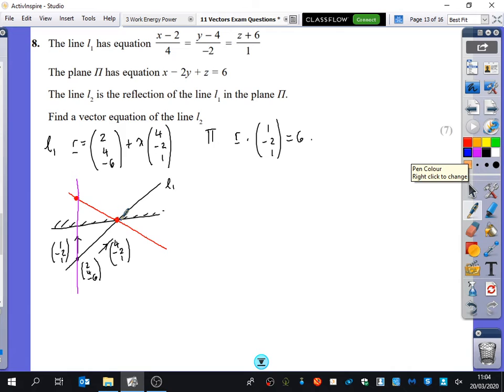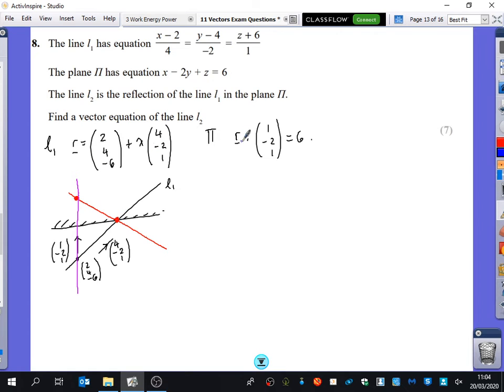So to find the intersection, we're going to take this and we're going to put it in here. So the intersection will be (2 plus 4λ, 4 minus 2λ, minus 6 plus λ) dotted with (1, minus 2, 1) equals 6. So that's 2 plus 4λ minus 8 plus 4λ minus 6 plus λ equals 6.